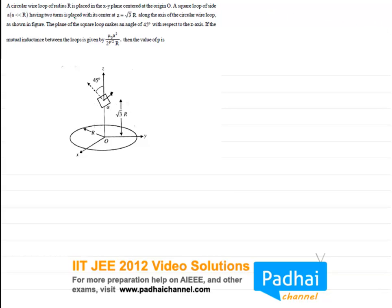Now let us see another problem. This is another easy problem. A circular wire loop of radius r is placed in the x-y plane centered at the origin. A square loop of side a, where a is less than r, having two turns is placed with its center at z equals root 3r along the axis of the circular wire loop as shown in the figure. The plane of the square loop makes an angle of 45 degrees with respect to the z-axis. If the mutual inductance between the loops is given by this formula, then what is the value of p in this formula?